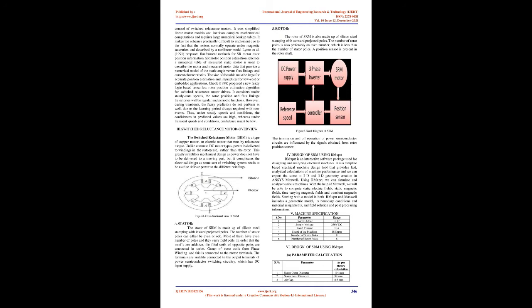Jean et al. (1998) proposed a novel position and velocity observer for robust control of Switched Reluctance Motors. It uses simplified linear motor models and involves complex mathematical computations and requires large numerical lookup tables. It makes the schemes practically difficult to implement due to the fact that the motors normally operate under magnetic saturation and are described by a non-linear model. Lyons et al. (1991) proposed flux/current methods for SR motor rotor position information. SR Motor Position Estimation Schemes use a numerical table of measured static motor data to describe the motor. The size of the table must be large for accurate position estimation and is impractical for low-cost or embedded applications.